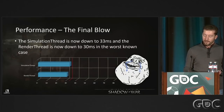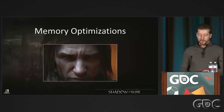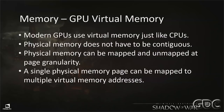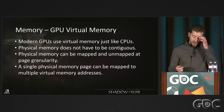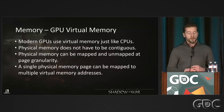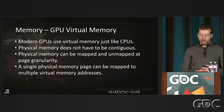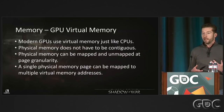Now that we're hitting frame rate, we need to get the game to actually fit in memory. Modern GPUs use virtual memory — we no longer have last-gen consoles without it. We no longer need to allocate contiguous physical memory on the GPU. The question is: can we exploit this virtual memory system to save memory?